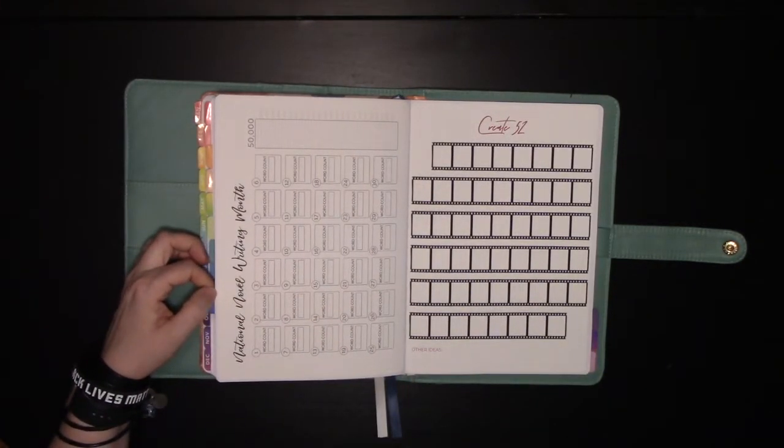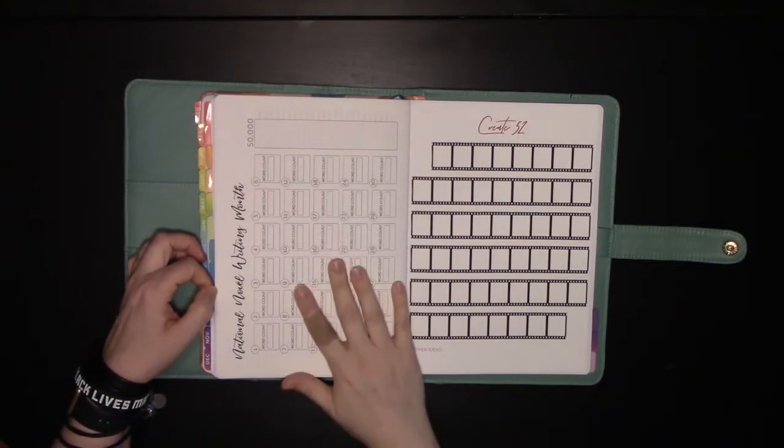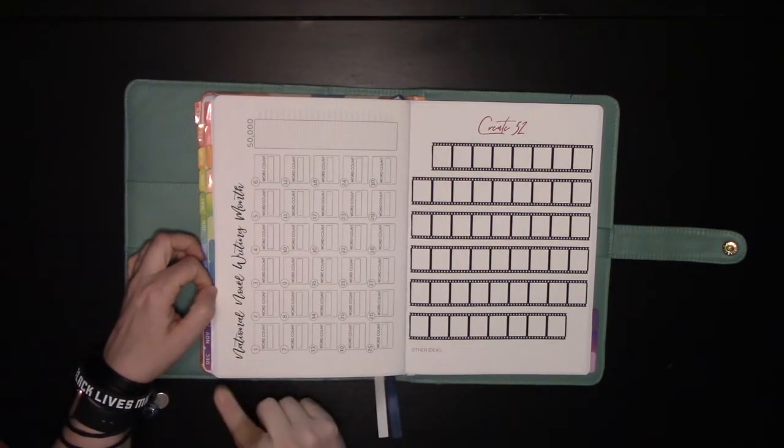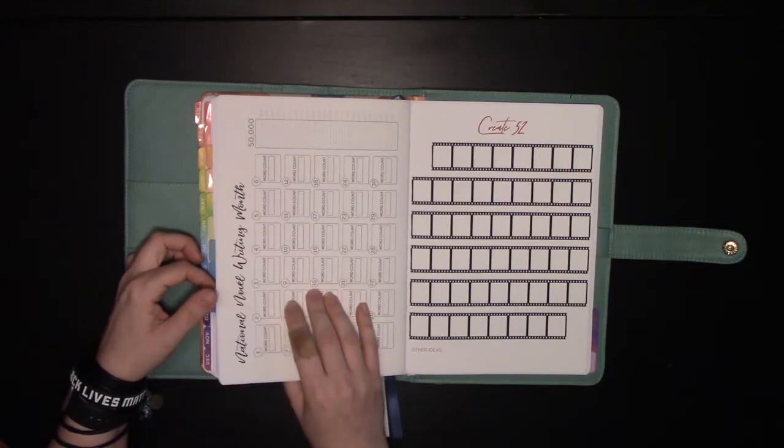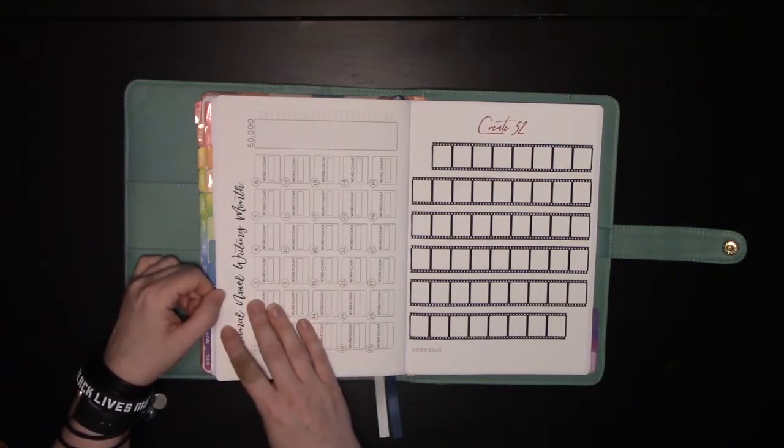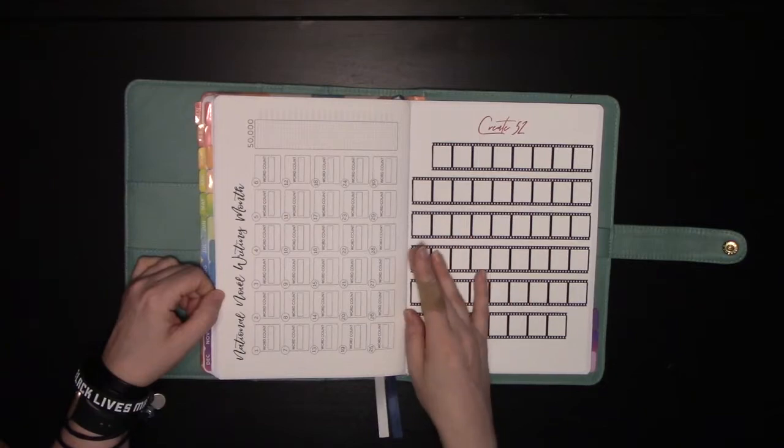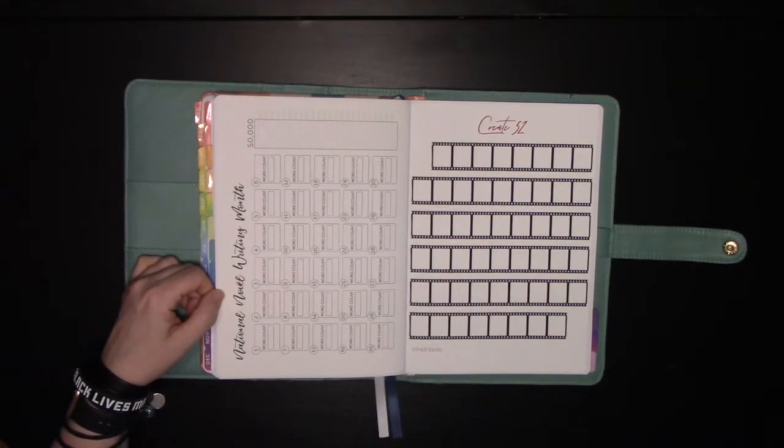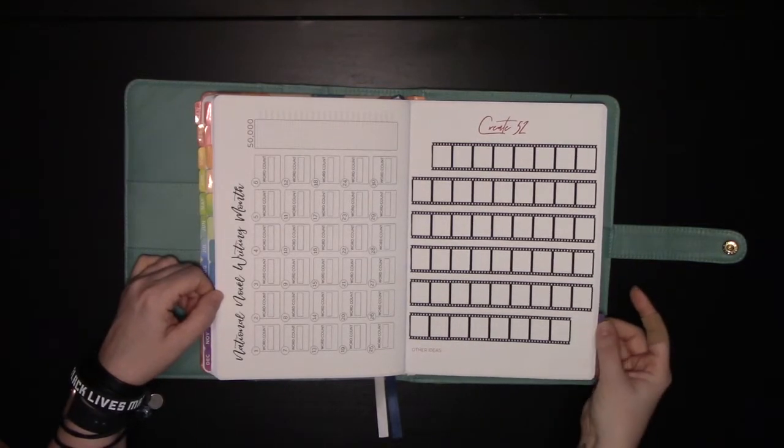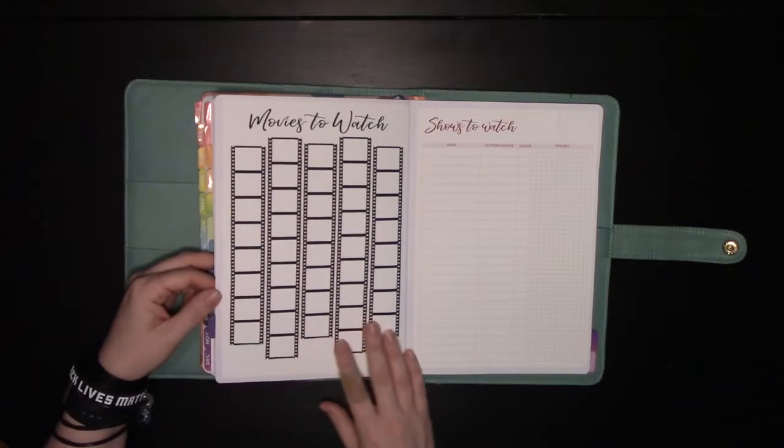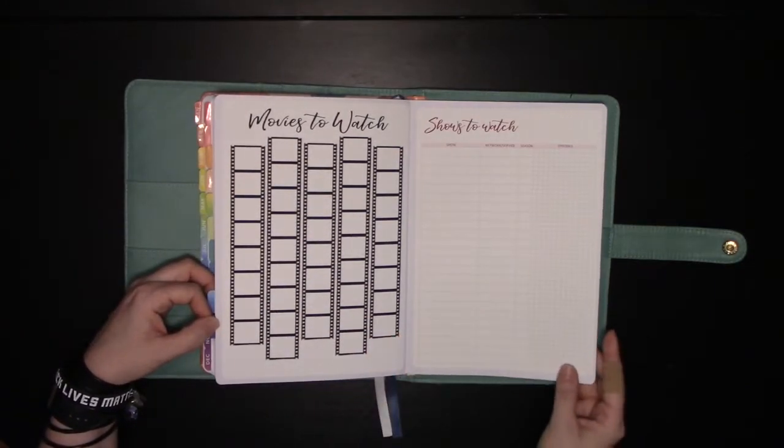These are my fun tracker stickers. My NaNoWriMo sticker that was in the shop. It's in the last chance page as of this filming because it will expire and I will do a new design for 2021. So if you want to get this one, it's 10% off in the last chance section of my Etsy shop right now. This is Create 52. This is a different photography challenge each week. I have that set up here and I will be filling in the challenges as I go. That's my creative tab.